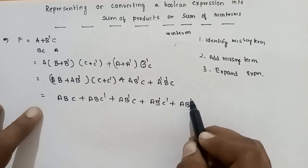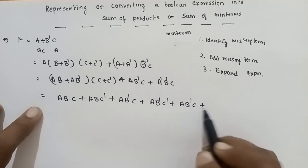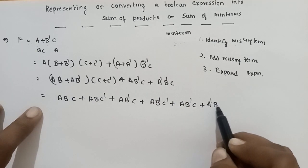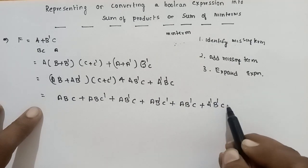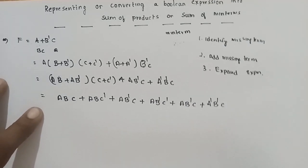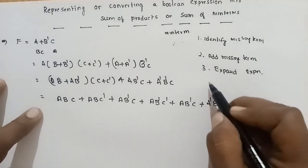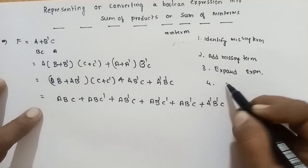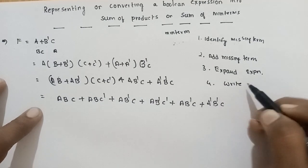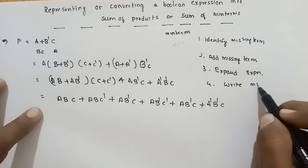Next: A, B dash, C plus A dash, B dash, C. Now I'm going to write the mean terms.